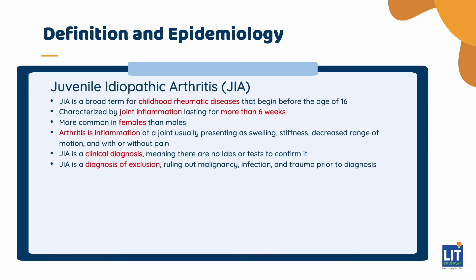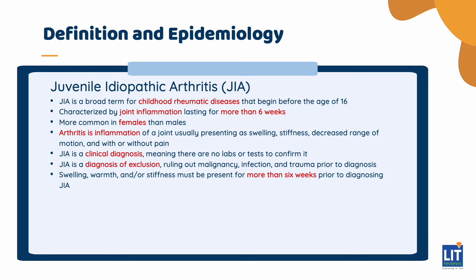Since there are no specific laboratory findings, and it is often common to have normal labs, clinical exam findings are the most important and only way to diagnose JIA. Swelling, warmth, and/or stiffness must be present for more than 6 weeks prior to diagnosing JIA, since infections or post-infectious processes can present exactly like JIA but should resolve by 6 weeks, if not sooner. The cutoff age for the diagnosis of JIA is less than 16. For example, if someone is seen at the age of 18 but reports symptoms that started when they were 15, then this is consistent with JIA.